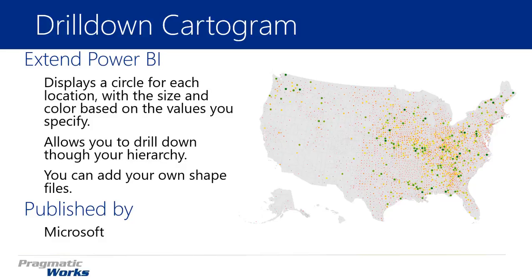As opposed to the previous map that actually outlined and highlighted a shape, this one will place a circle or dot on your map to indicate a set of values. The size and color of that circle are specified by the values you pass into the visual. It also supports drill down capability, so if you want to drill through a geographical hierarchy you can use this visual.